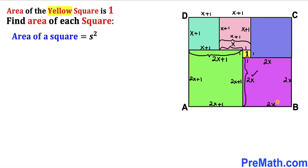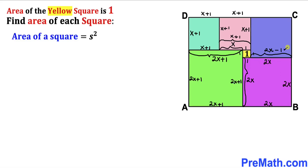Finally let's focus on this blue square. We know that the side length of the purple square is 2x and this tiny length is 1, so therefore the side length of this blue square is going to be 2x minus 1. Each side of the blue square is 2x minus 1.